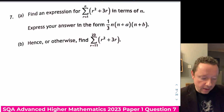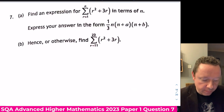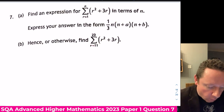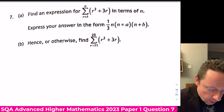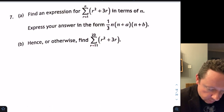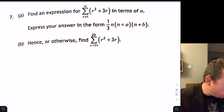Advanced Higher Maths 2023 Paper 1, Question 7: find an expression for the sum from r equals 1 to n of r² plus 3r in terms of n, leaving the answer in a specified form.